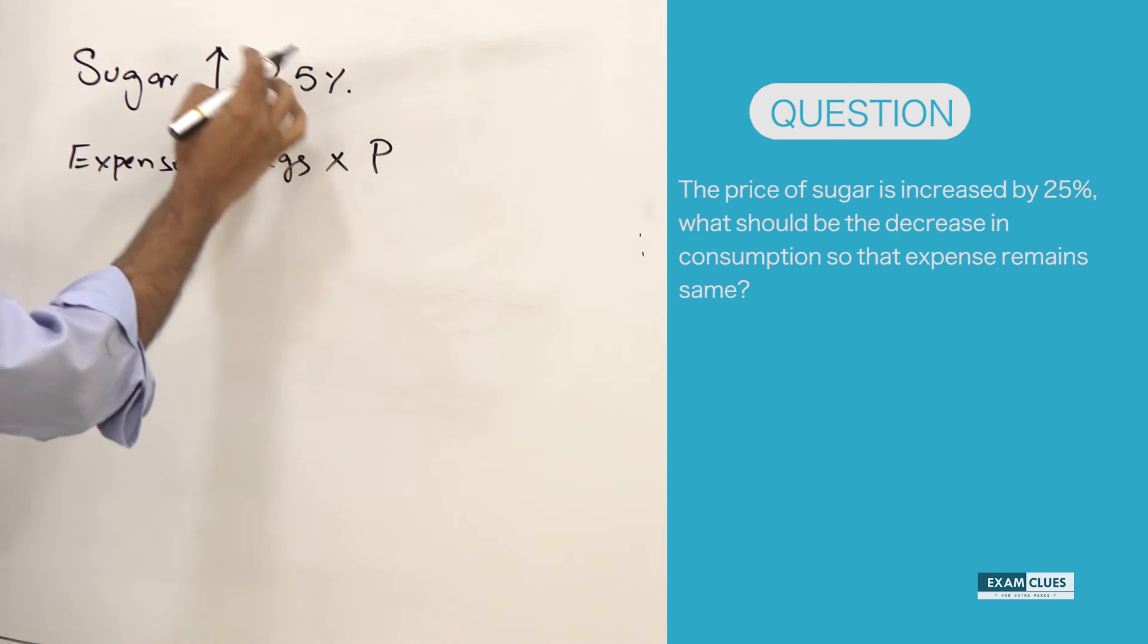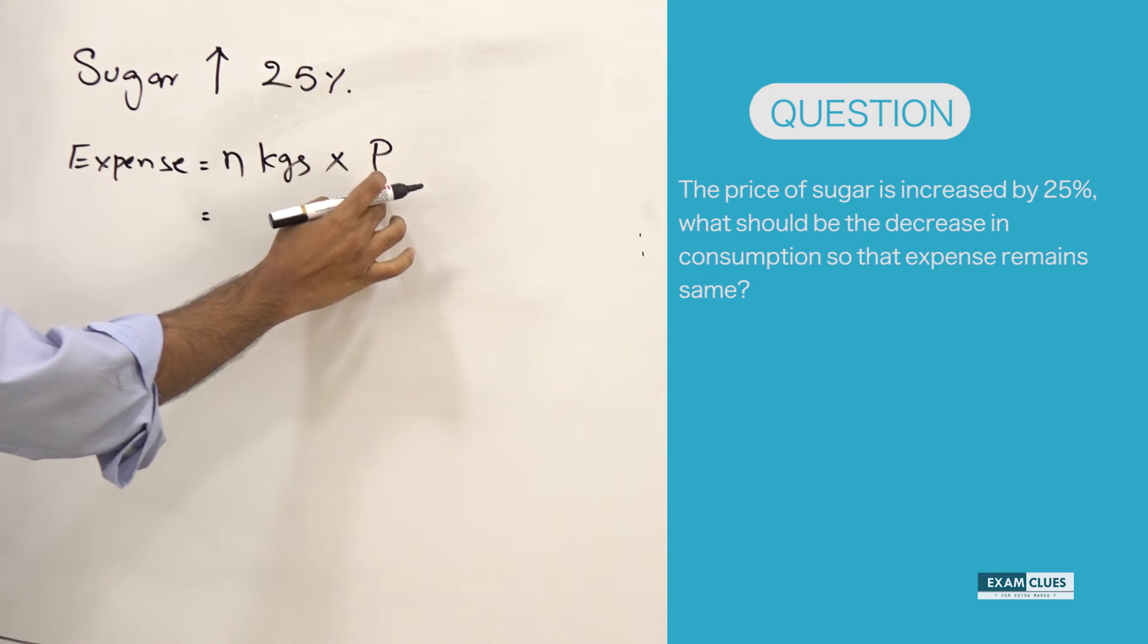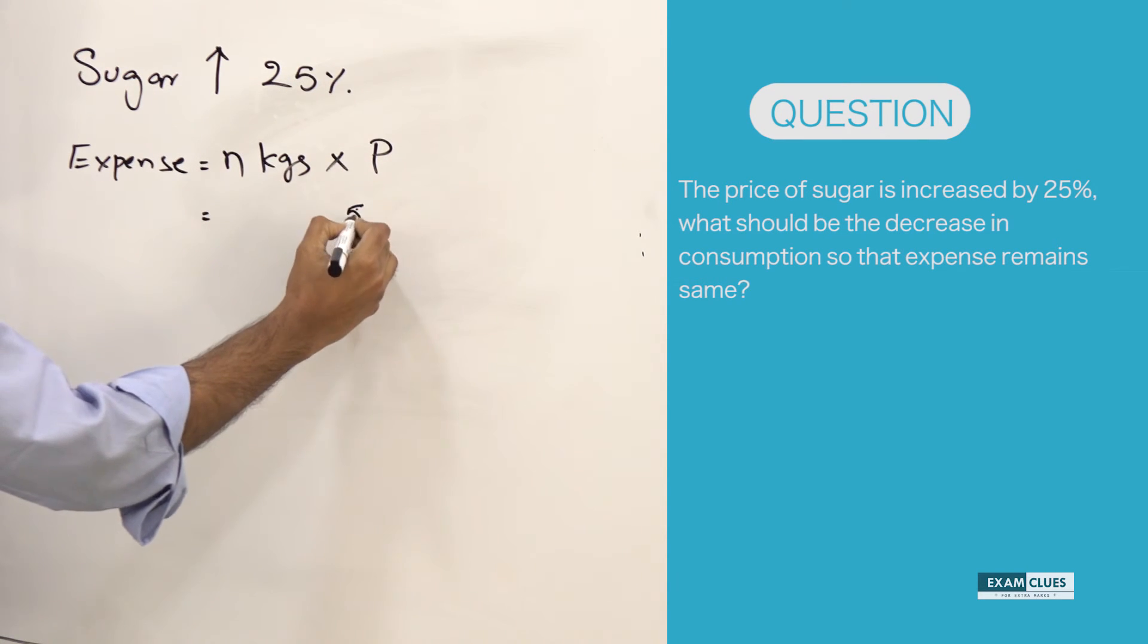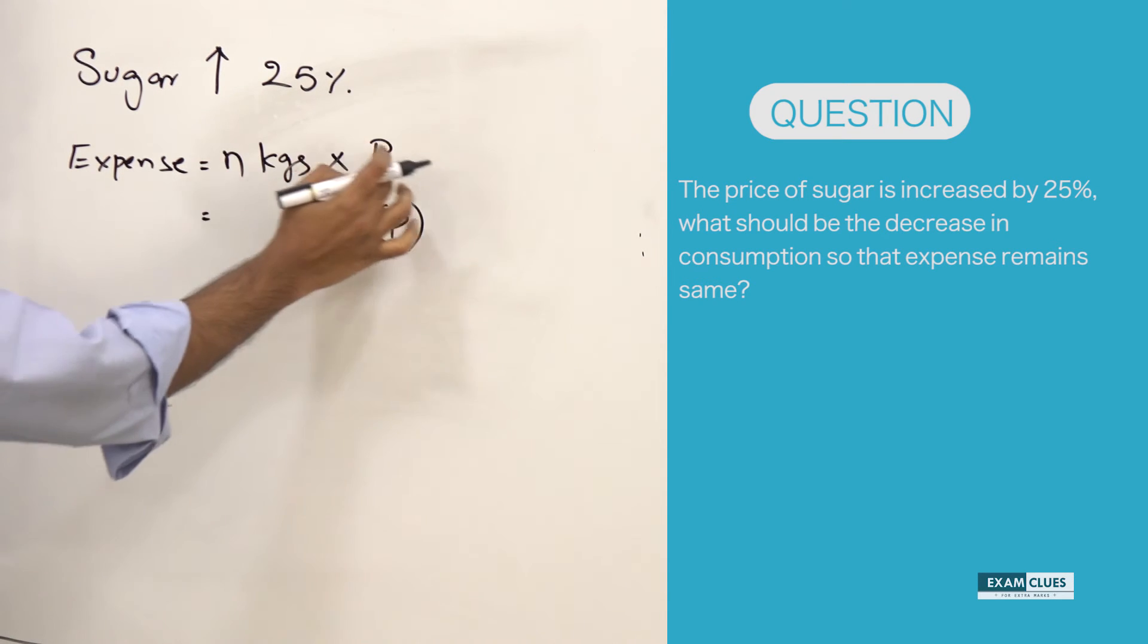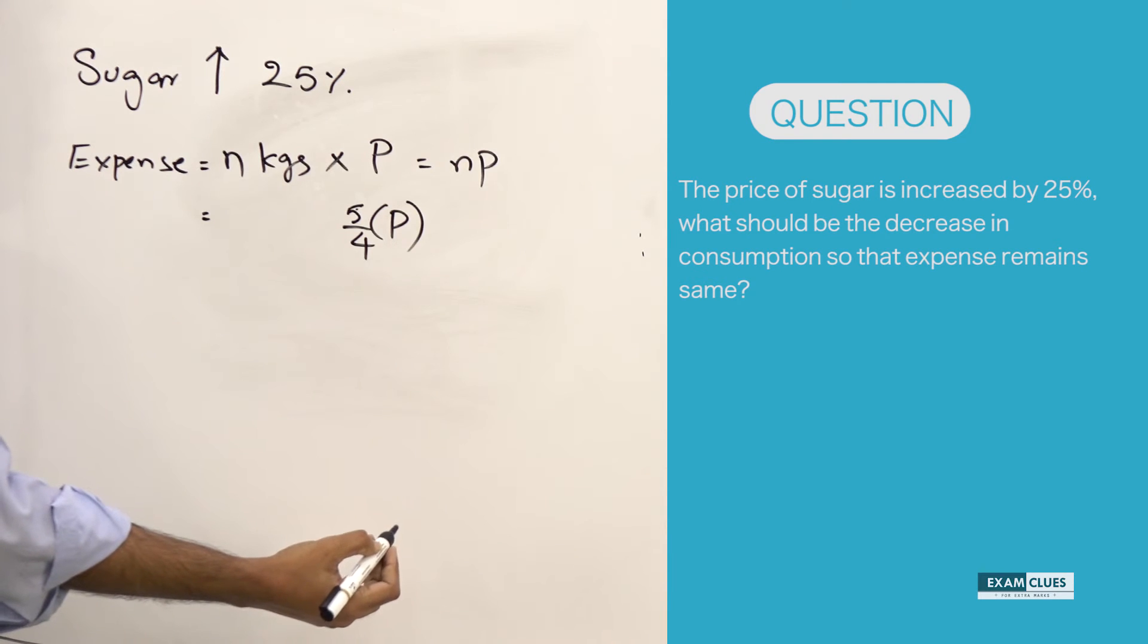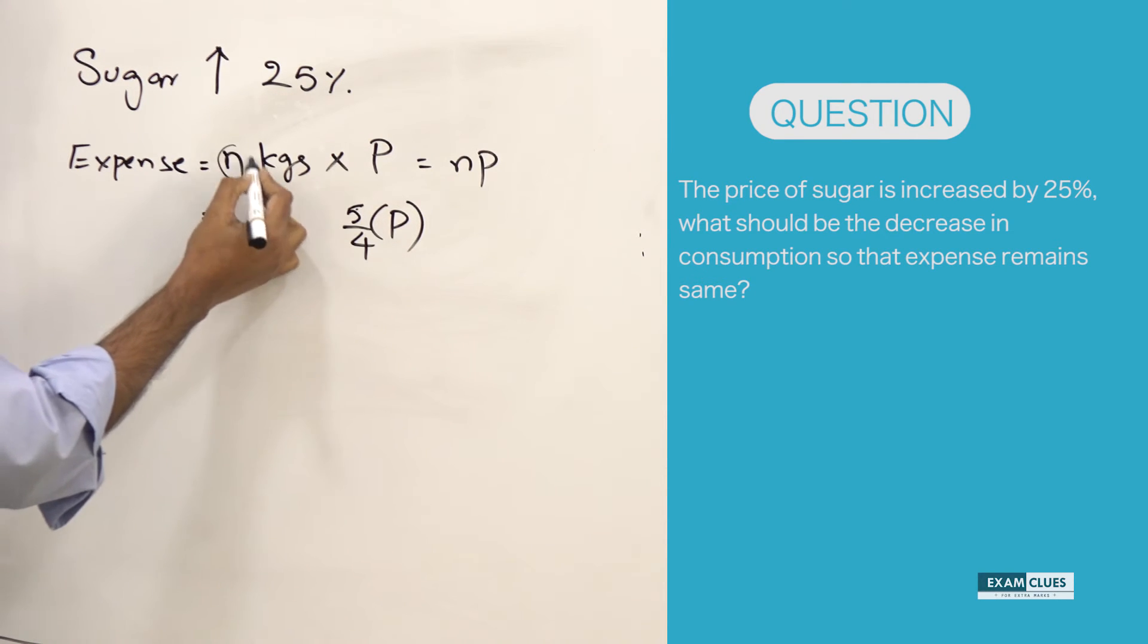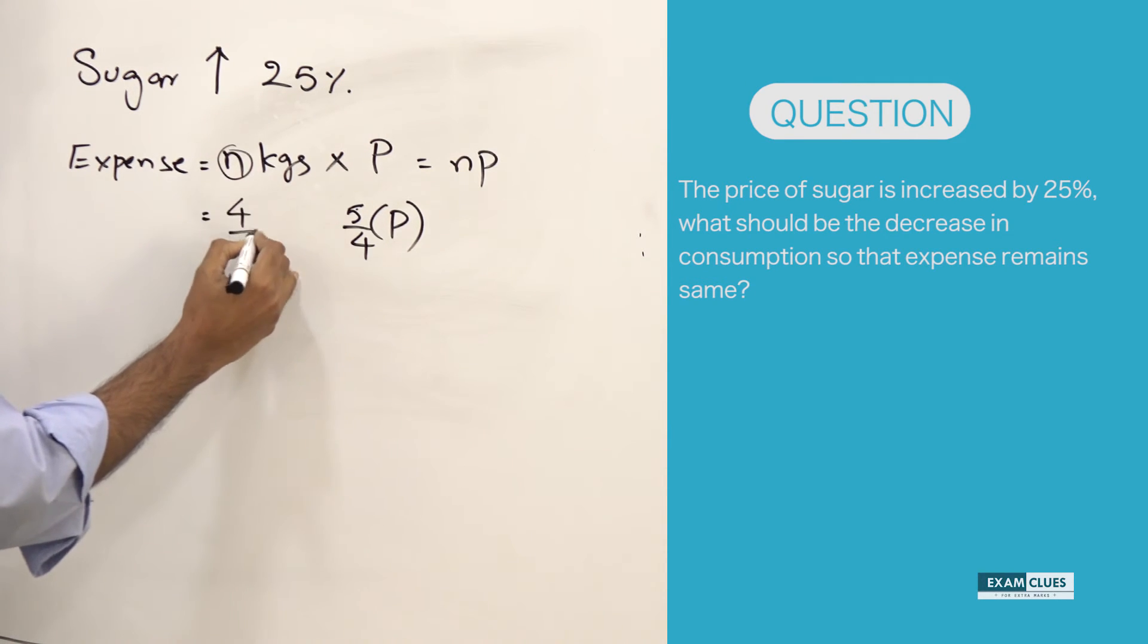But what happened? The sugar cost is increased by 25%, which means this P will become 5 by 4 P. But if it needs to remain as simply NP, what should we do? N should be multiplied by 4 by 5, so 4 by 5 N, so that they get cancelled out.